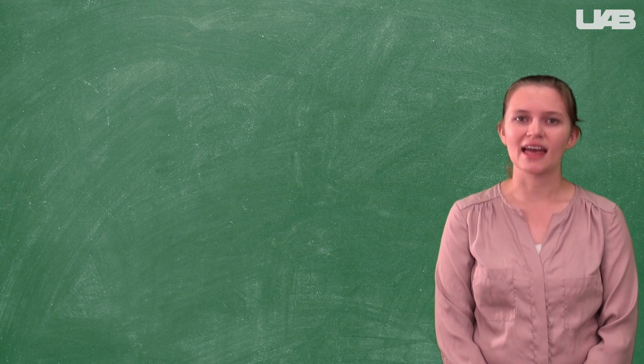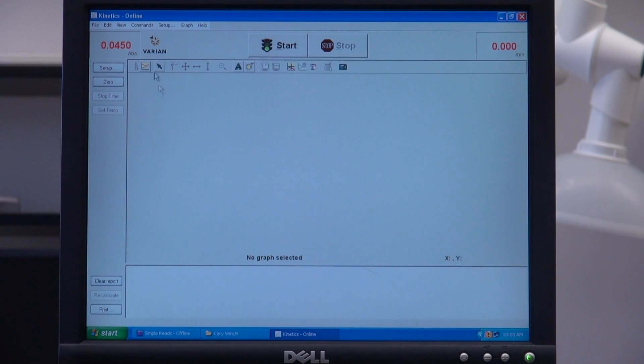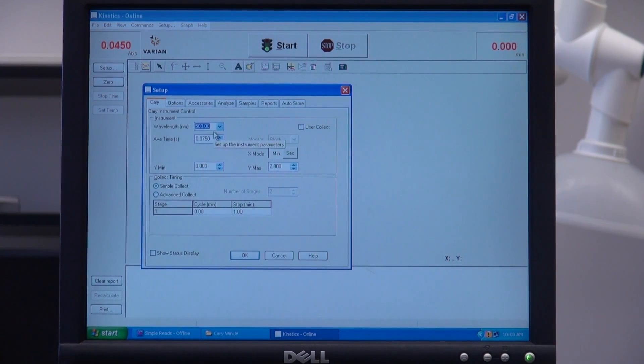This week we will be using the kinetics program on the spectrophotometer. Select Setup and set your wavelength to 560 nm. Hit OK.